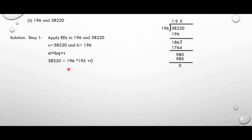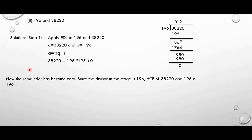We are lucky that we got the solution in the first step itself. At this stage the divisor is 196. Therefore 196 is the HCF of 38,220 and 196.